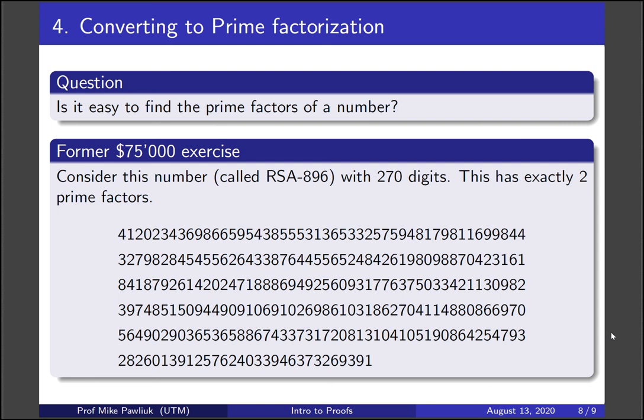The fact that it's called RSA 896 is related to an encryption method. So this should help convince you that finding the prime factors of things are hard. It turns out that this problem is even hard for computers.